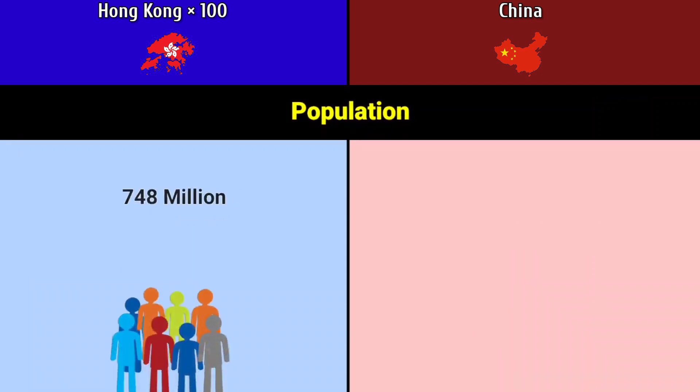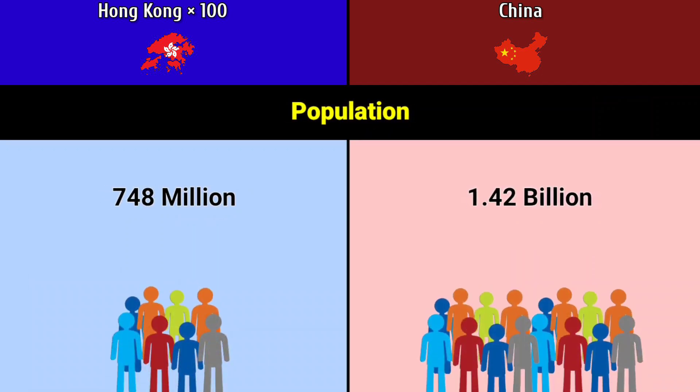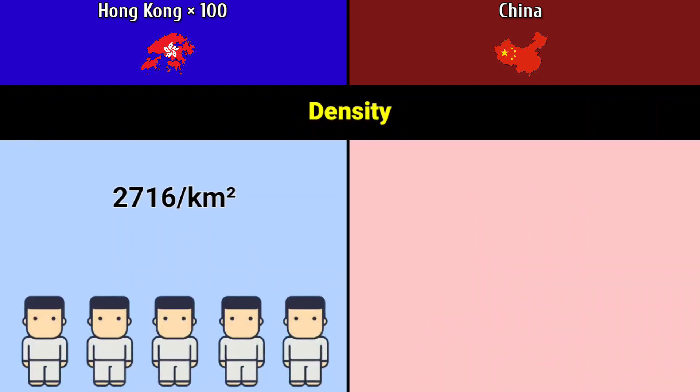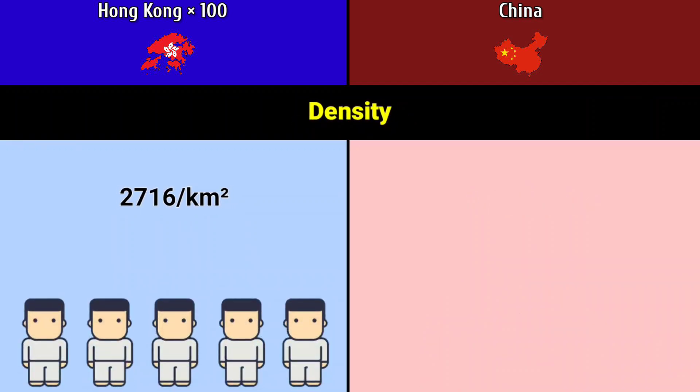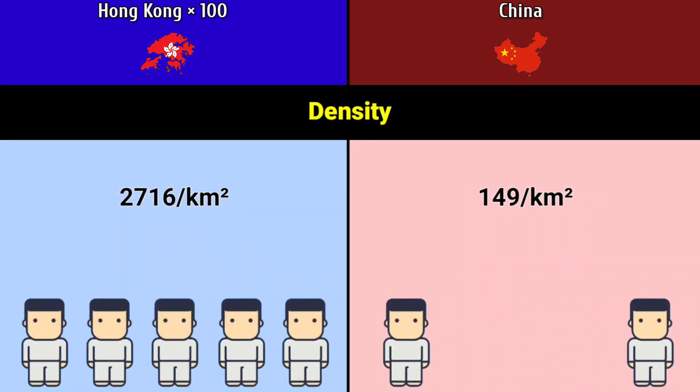Population: Hong Kong 748 million, China 1.42 billion. Density: Hong Kong 2,716 per square kilometer, China 149 per square kilometer.